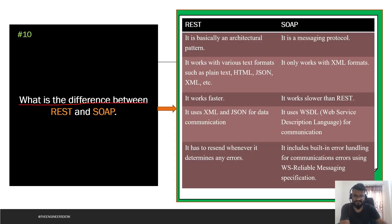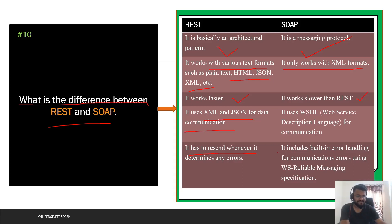The next question asks about the difference between REST and SOAP. REST is an architectural pattern, whereas SOAP is a messaging protocol. REST works with various text formats like plain text, HTML, JSON, and XML; however, SOAP only works with XML. REST is faster, while SOAP is slower. REST uses XML and JSON for data communication, whereas SOAP uses WSDL for communication. REST has built-in responses that determine errors, whereas SOAP includes built-in error handling for communication errors using the WS-ReliableMessaging specification. These are the main differences between REST and SOAP. See you in the next video — bye!